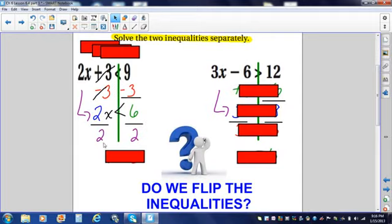That means multiplication. I divide both sides by 2. What happens in Vegas stays in Vegas. 6 divided by 2 gives you 3. Bring down your inequality sign. Bring down the variable x.